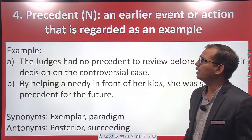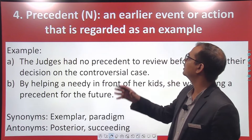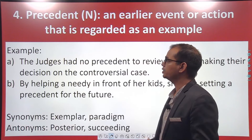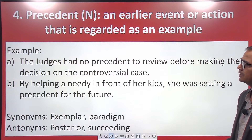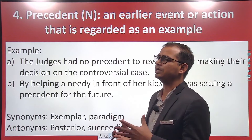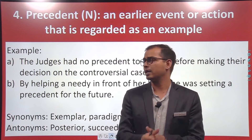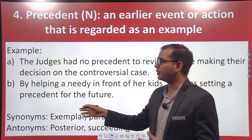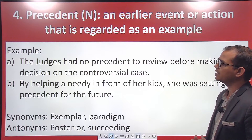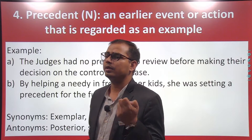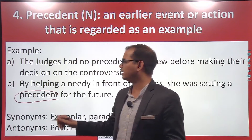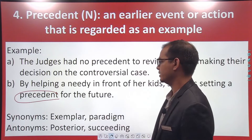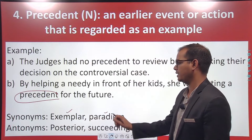The fourth word is 'precedent.' Precedent means an earlier event or action that is regarded as an example — kuch aisa karna jo ek example set kar de. For example: the judges had no precedent to review before making their decision on the controversial case. Generally in courts, judges rely on precedents from decided matters. Another example: by helping a needy person in front of her class, she was setting a precedent for the future. Precedent can be replaced with the word 'example.' Synonyms are 'exemplar' and 'paradigm'; antonyms are 'posterior' and 'succeeding.'